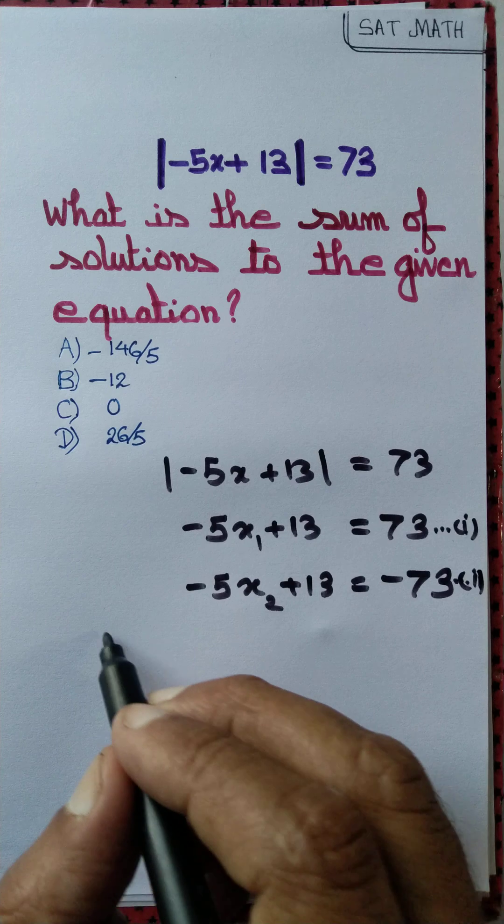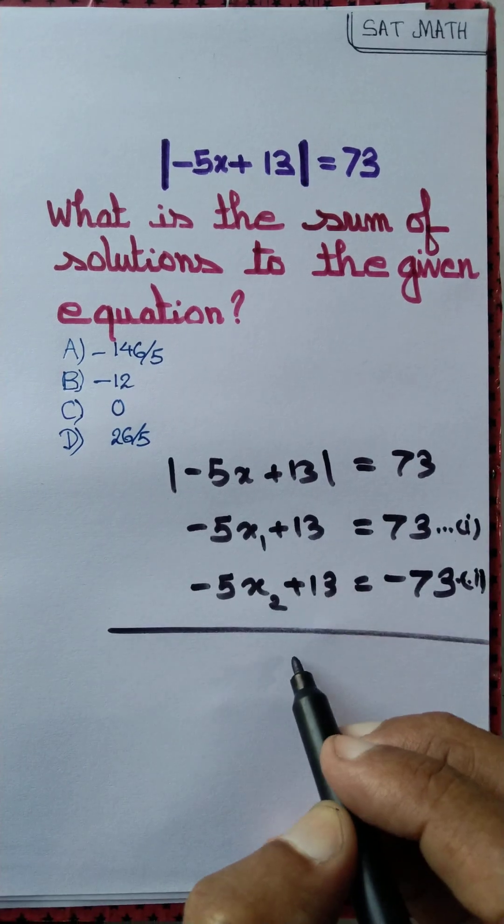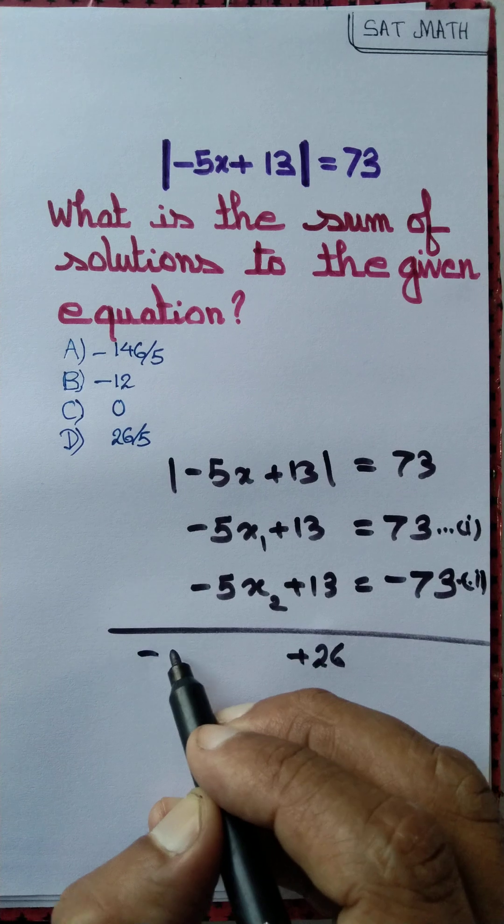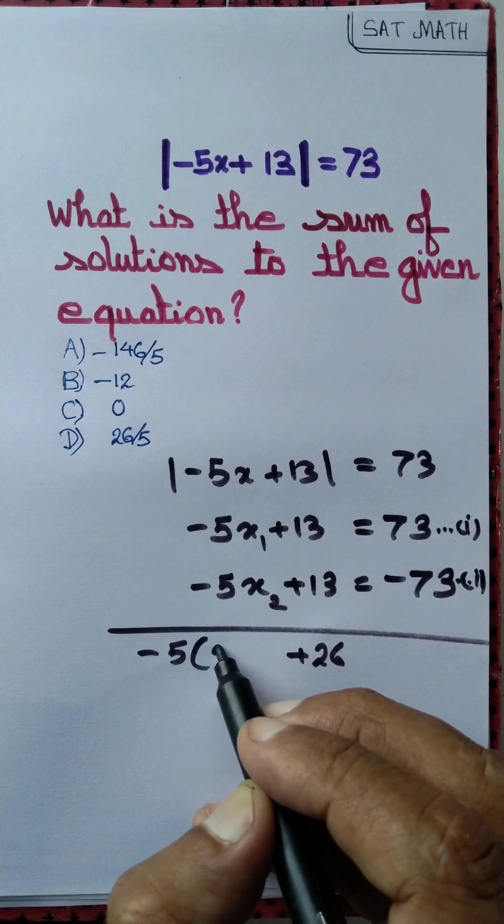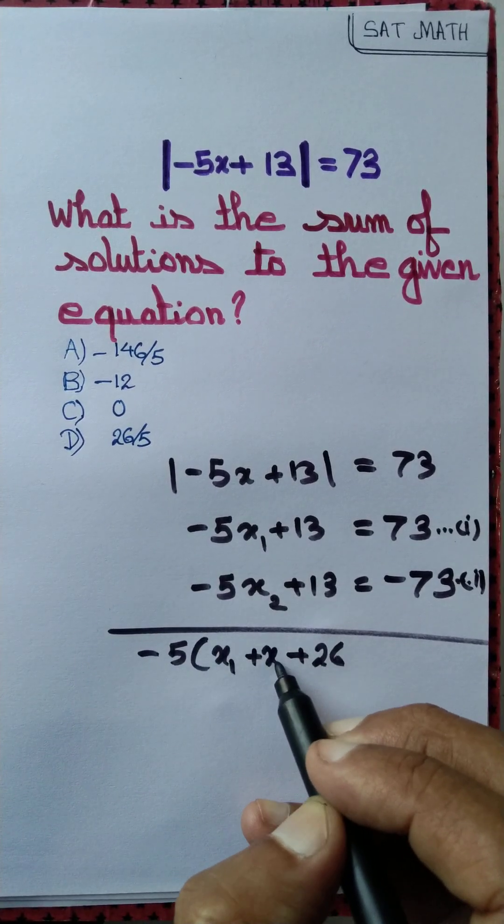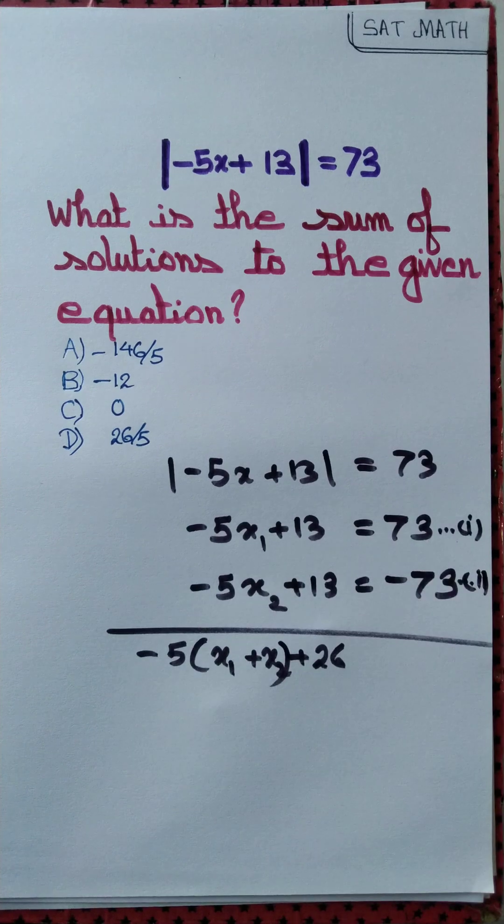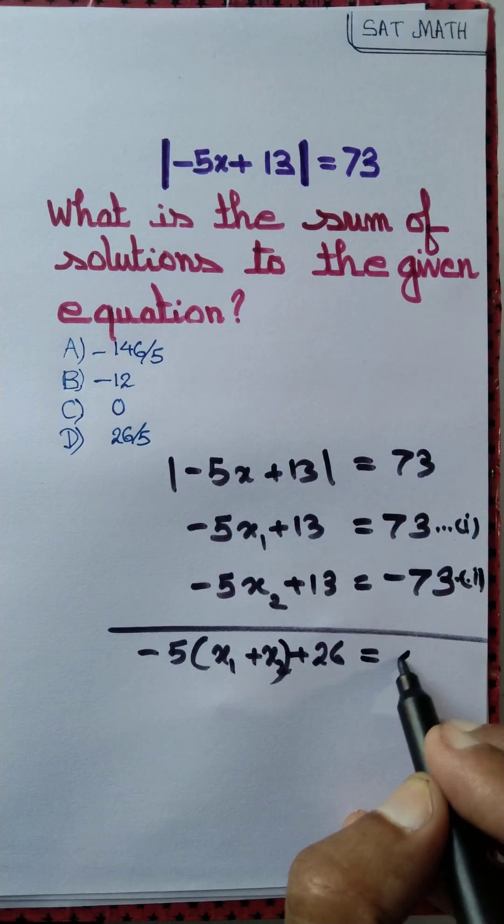Let's add those two equations. When we do so, we get 13 plus 13 is 26, minus 5 we can take common and we'll get x1 plus x2, and then plus 73 and minus 73 if we add we get 0.